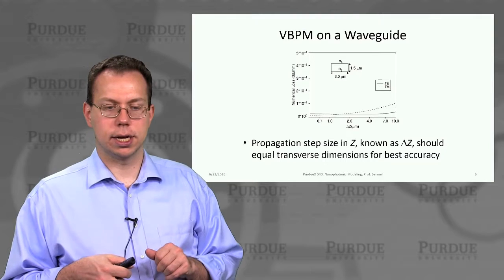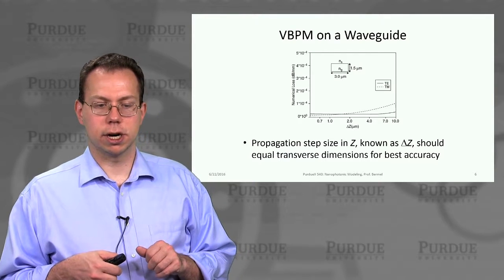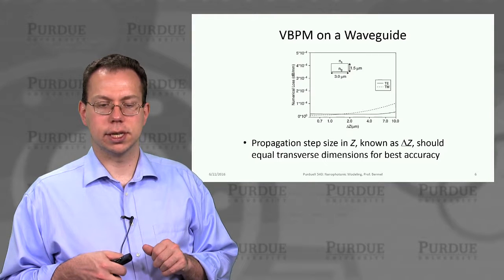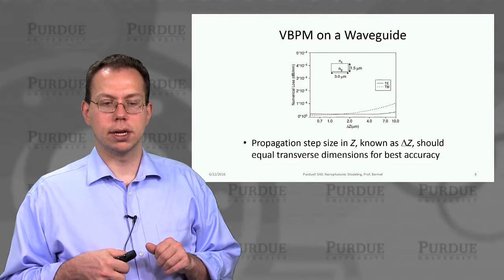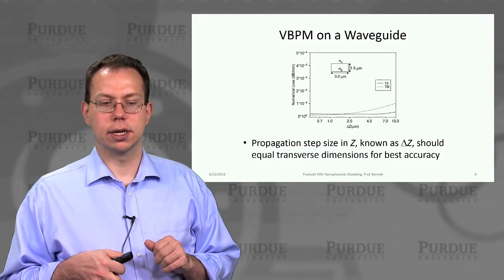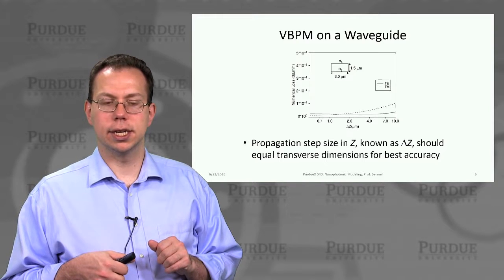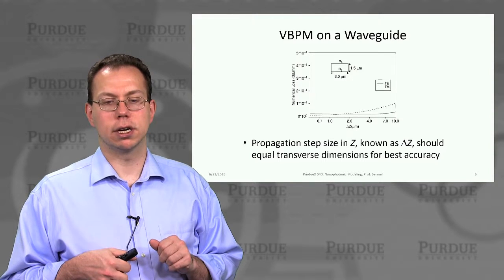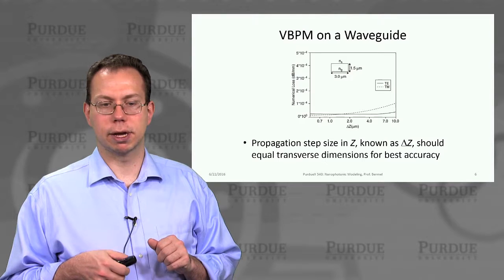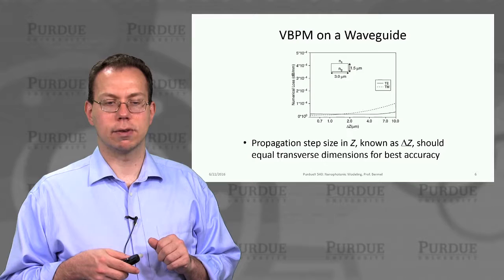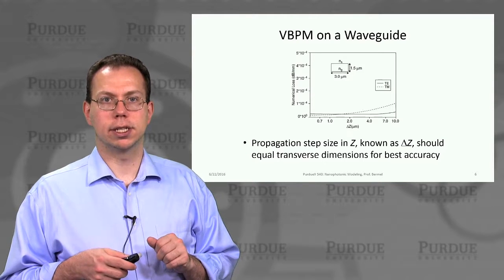If we plot the numerical loss associated with different delta Z values for the propagation step, you can see that for TE and TM it varies quite a bit. TE is flatter than TM, which gives us a rough idea of what reasonable ranges of step sizes we might want to use. In the next lecture, we'll explain more details about how we can check the accuracy of these kinds of results.